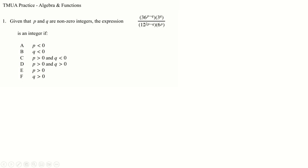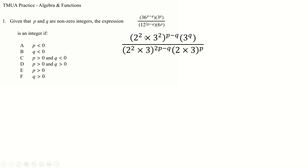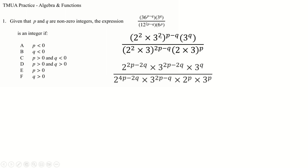The key thing here is to make all the bases the same. The problem is they're not all nice powers of just two or three — they're mixed together. That's okay because we just prime-factorize them all and then distribute the powers to each of their primes. So 36 is 2² × 3², and then we distribute that (p minus q) to both of those individually.